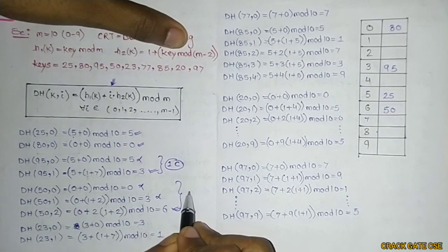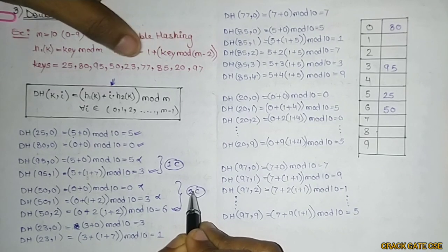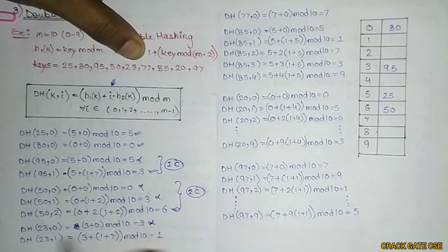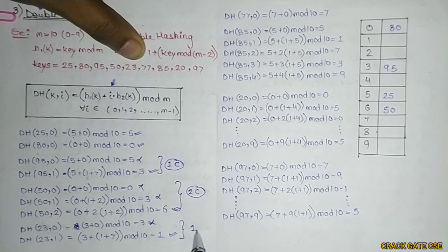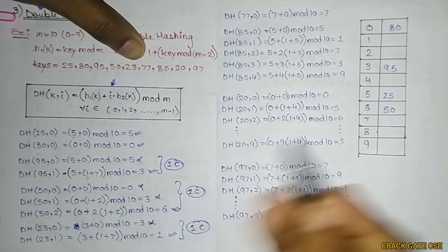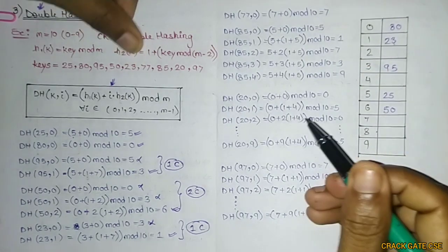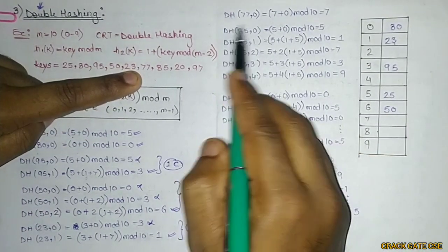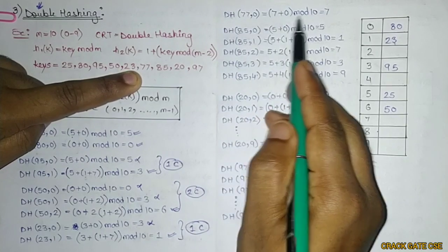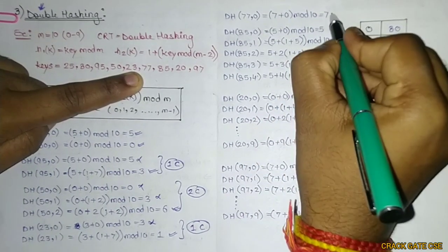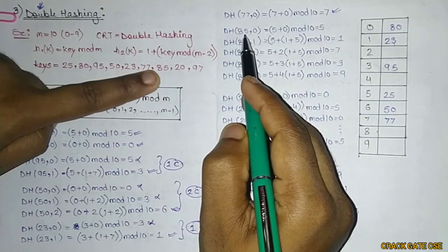For key 23: with i=0, result is 3 — collision. With i=1, result is 1 — no collision. So 23 is stored at position 1 with one collision. For key 77: 77 with i=0 gives position 7, which is available — no collision. 77 is stored at position 7.